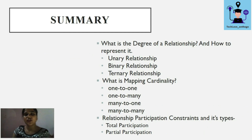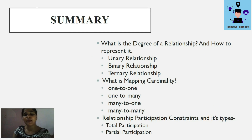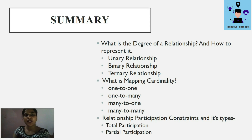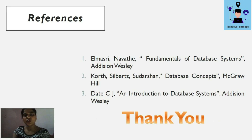In this lecture we discussed degree of relationship — how to represent it and the various types: unary, binary, and ternary. We also discussed mapping cardinality and ways to represent it — one-to-one, one-to-many, many-to-one, and many-to-many. Finally, we discussed participation constraint, ways to represent it, and types: total participation and partial participation. Thank you for your patience.